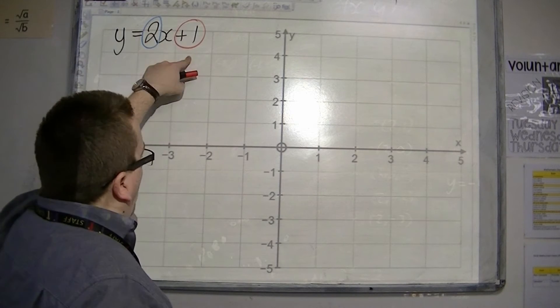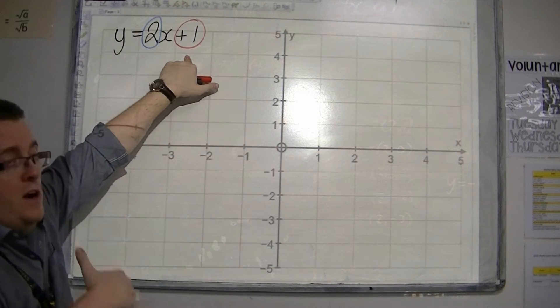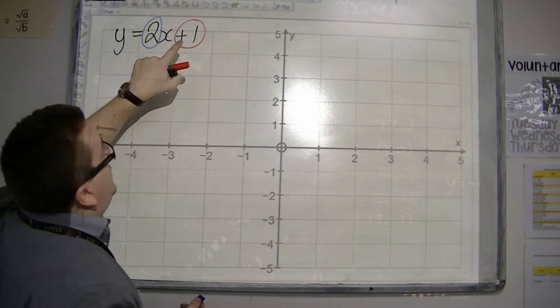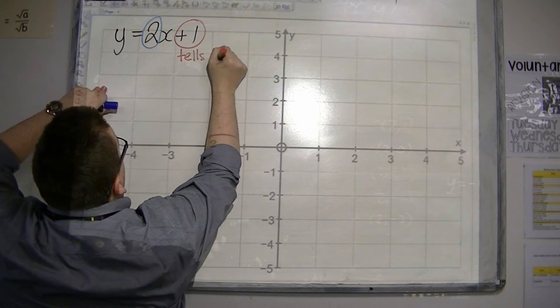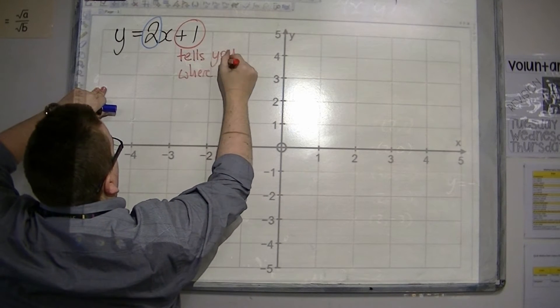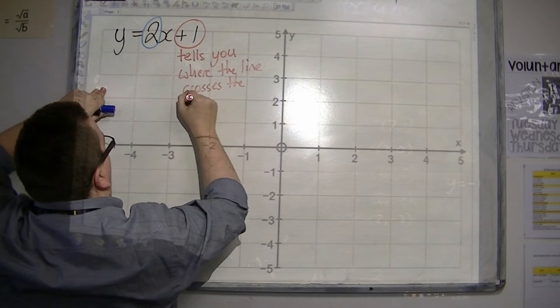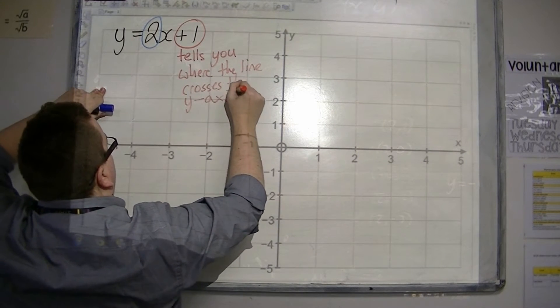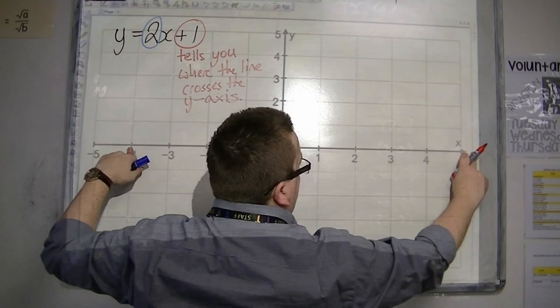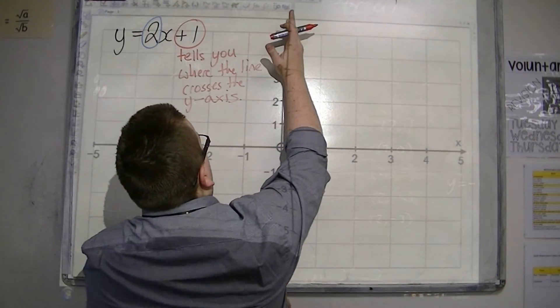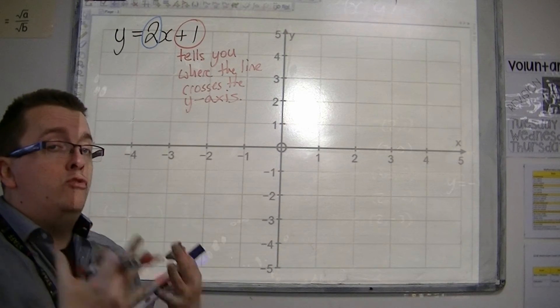The plus 1, the number on the end, whether it be plus 5 or minus 2 or plus 100, this number tells you where the line crosses the y-axis. So beforehand I told you that the x-axis is the horizontal line and the y-axis is the vertical line. So it tells you, that plus 1, where it crosses the y-axis.